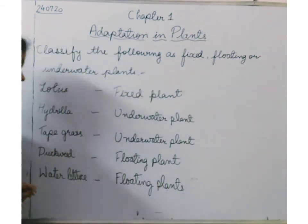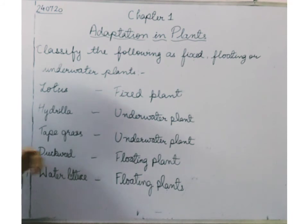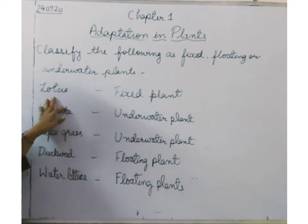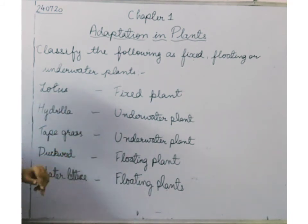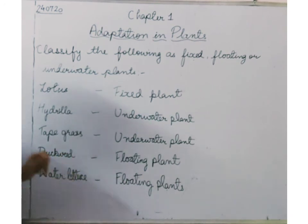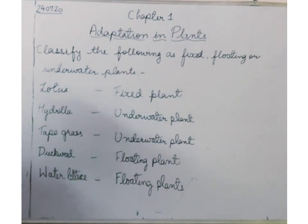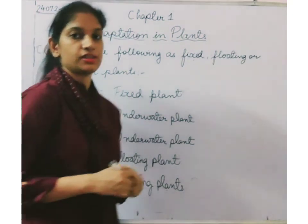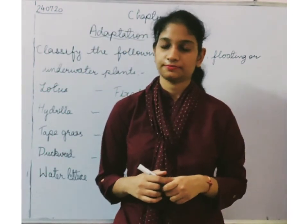So here we have some examples of the different types of aquatic plants: fixed plants — example is lotus; underwater plants — hydrilla and tape grass; floating plants — duckweed and water lettuce. So that's all for today's session. Thank you so much.